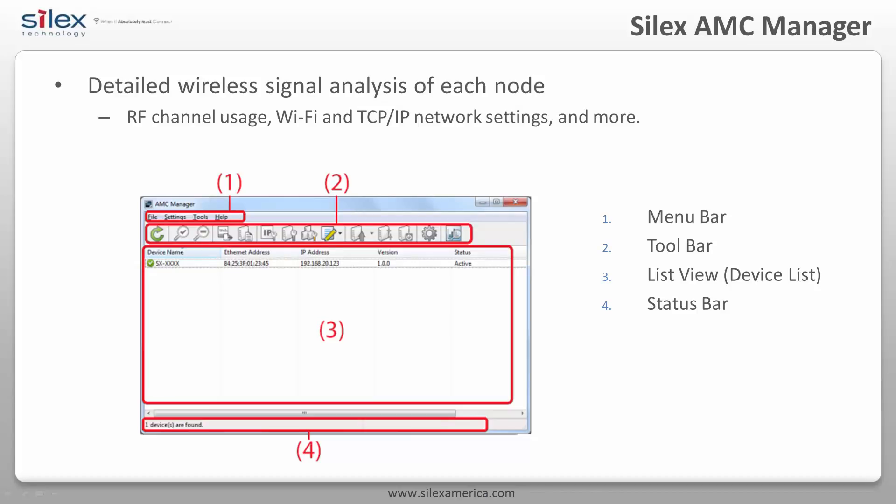AMC Manager has an intuitive interface with four main sections. The menu bar at the top allows execution of each function from a menu-based format. The toolbar right below it has icons for easy access to the commonly used functions. The device list is the main section — it shows a list of Silex products running on the network and the operating status of each one. The status bar at the bottom shows information of the Silex device selected.